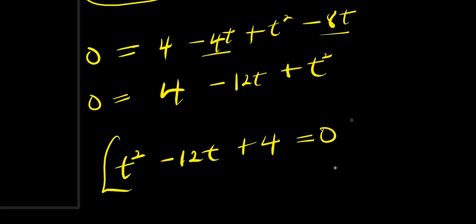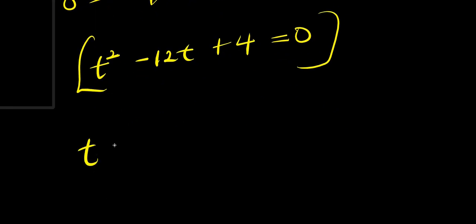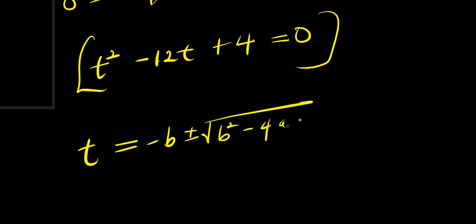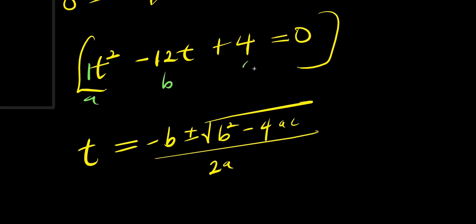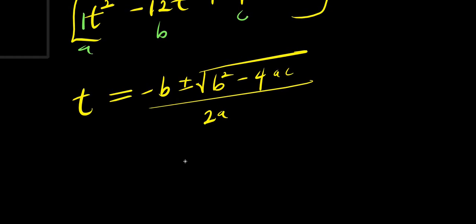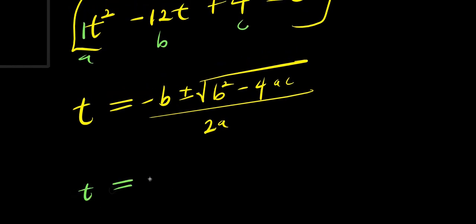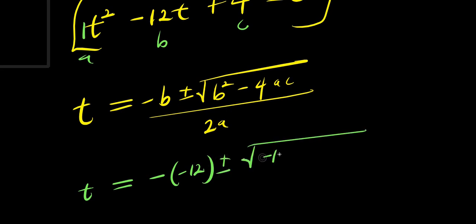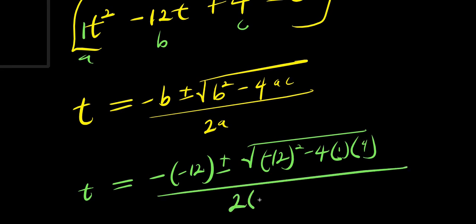Let's rearrange it: t squared minus 12t plus 4 equals 0. We are going to solve it using the quadratic formula. t equals negative b plus or minus square root of b squared minus 4ac, divided by 2a. Here a equals 1, b equals negative 12, and c equals 4. Substituting: t equals negative times negative 12, plus or minus square root of negative 12 squared minus 4 times 1 times 4, divided by 2 times 1.